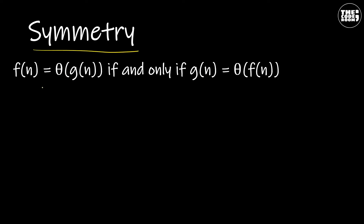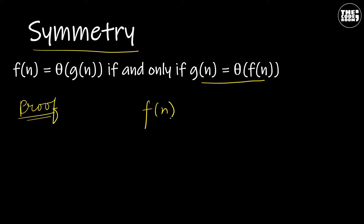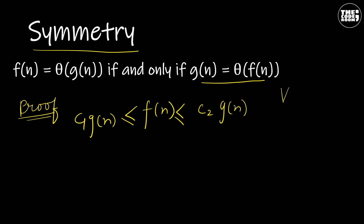Symmetry. A function f(n) is the Theta of g(n) if and only if g(n) is the Theta of f(n). By the definition of Theta notation, we have a function f(n) such that f(n) is greater than or equal to c1·g(n) and is less than or equal to c2·g(n), for all values of n greater than or equal to n₀.